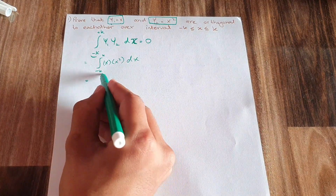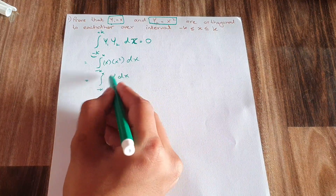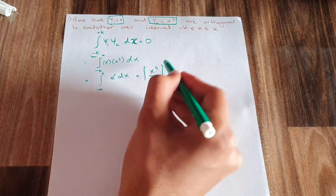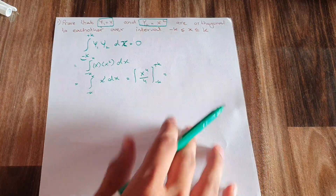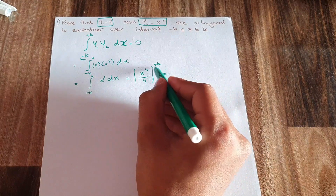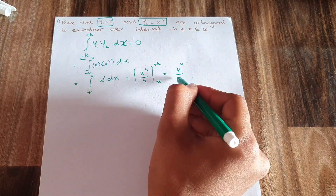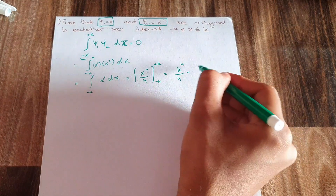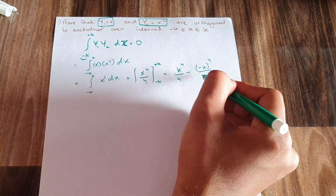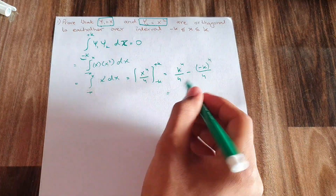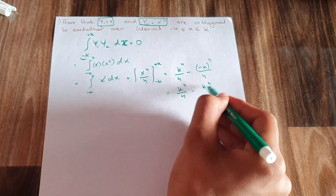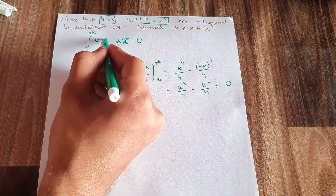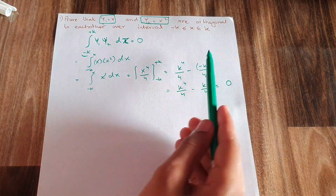Plugging in ψ₁ = x and ψ₂ = x², the integral becomes the integral of x · x² dx = x³ dx from −k to +k. The integration of x³ gives x⁴/4. Applying the limits: k⁴/4 − (−k)⁴/4 = k⁴/4 − k⁴/4 = 0. Therefore ψ₁ and ψ₂ are orthogonal to each other.